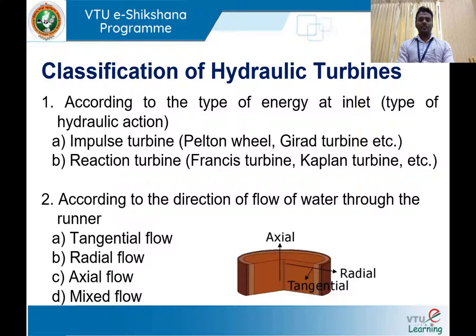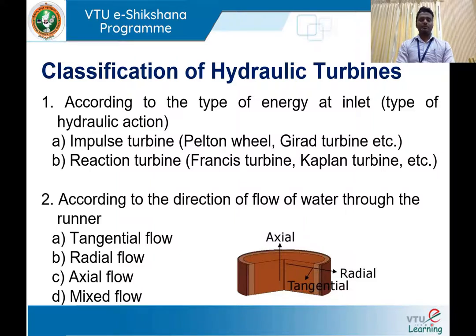In a reaction turbine, both pressure energy and kinetic energy are used. Due to the pressure difference, the turbine wheel is set into rotation, which is used to generate electrical power. The Pelton wheel and Girard turbine are the best examples of impulse water turbines. The modern Francis turbine and Kaplan turbine are the best examples of reaction turbines. To summarize: in an impulse turbine, the main driving force is the kinetic energy of water; in a reaction turbine, the driving force is both kinetic energy and pressure energy.